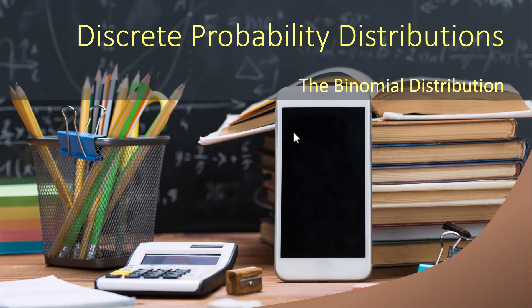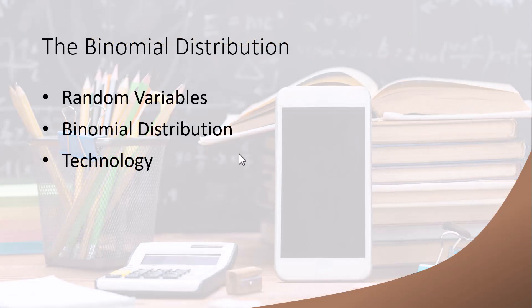Hi everybody. The purpose of this video is to go over section 2 of chapter 5, and we are going to introduce a very specific type of discrete distribution called the binomial distribution. Before we can talk about the binomial distribution, we need to talk about the idea of a random variable. Once we've done that, we can tie this to a binomial random variable, which has a binomial distribution, and we will use that to calculate probabilities. I will also show you how to use technology — namely your calculator — to do that.